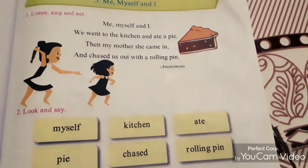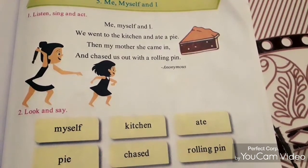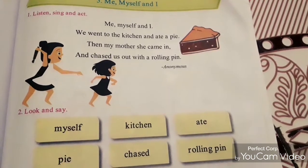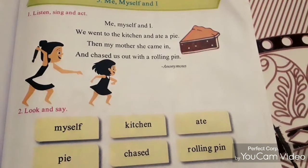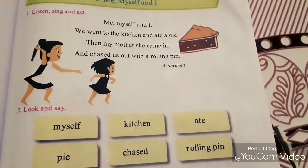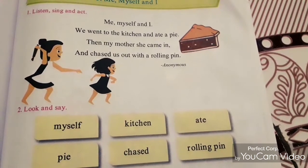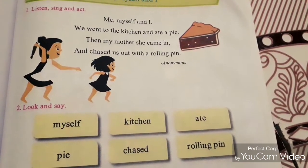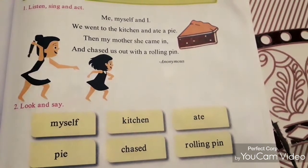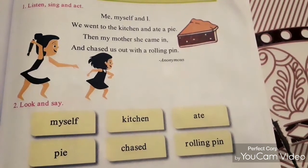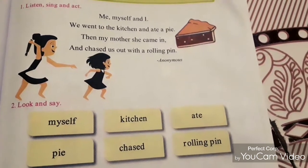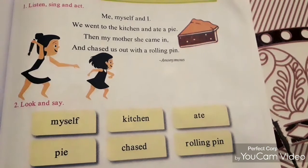Let us start with Me, Myself and I. We went to the kitchen and ate a pie. Then my mother, she came in. And chased us out with a rolling pin.